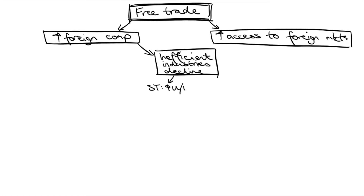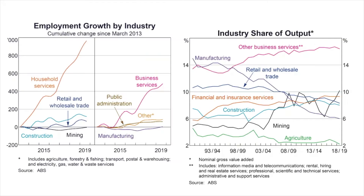This leads to a loss of jobs and structural unemployment in the short term. This could also lead to income inequality, as it is usually those in inefficient industries with low skills and already low wages who lose their jobs. Efficient industries can grow even larger as they access global markets, further widening the wage gap.